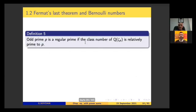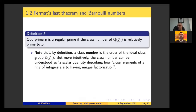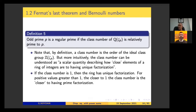Kummer felt compelled to respond and, few weeks after Lamé's publication, he had a proof for a select group of integers satisfying Fermat's last theorem — he called them regular primes. A prime P is a regular prime if the class number of Q(ζ_p) is relatively prime to P. The class number is the order of the ideal class group, which can be understood as a scalar quantity describing how close elements of a ring of integers are to having unique factorization. If the class number is one, then the ring has unique factorization.